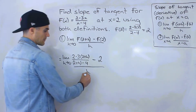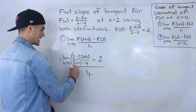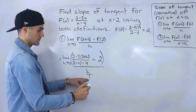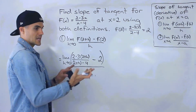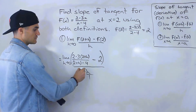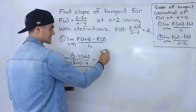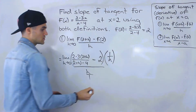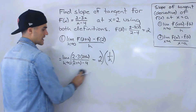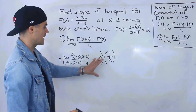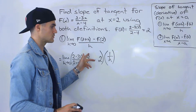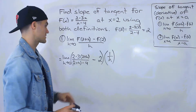Now, dividing by h is the same as dividing by h over 1, which is the same as multiplying by 1 over h. I'm going to write it as multiplying by 1 over h, because after simplifying it will be easier to see how the h's cancel out.